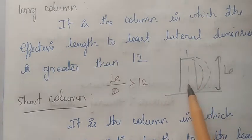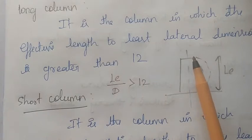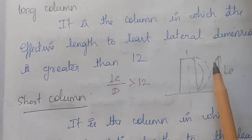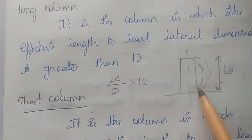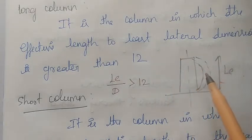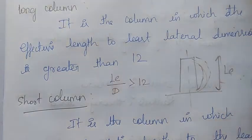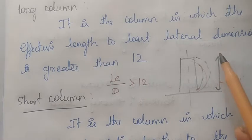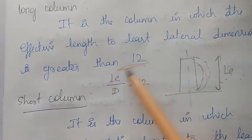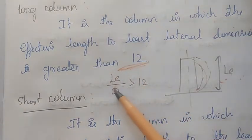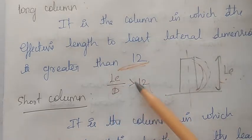Now there is the effective length. Effective length relates to the bending effect — the length over which bending occurs. We call this the effective length because it is the length that is effective in bending. The short column is one in which the ratio of effective length to the least lateral dimension is less than 12. The effective length is L and D is the least lateral dimension; we check L divided by D against 12.